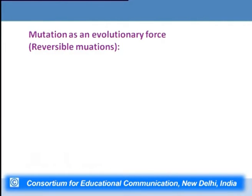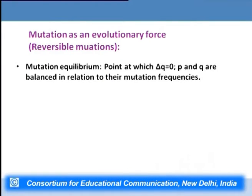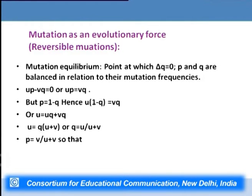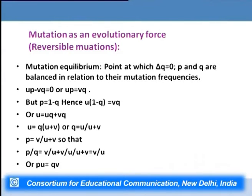For reversible mutations — where capital A converts to small a and vice versa — we use the mutational equilibrium formula, the point at which delta Q = 0 and P and Q are balanced in relation to their mutation frequencies. Setting U·P − V·Q = 0, and knowing P = 1 − Q, we find that at equilibrium P/Q = V/(U + V), or equivalently P·U = Q·V. So P is the frequency of capital A, Q is the frequency of small a, U is the forward mutation rate, and V is the reverse mutation rate.